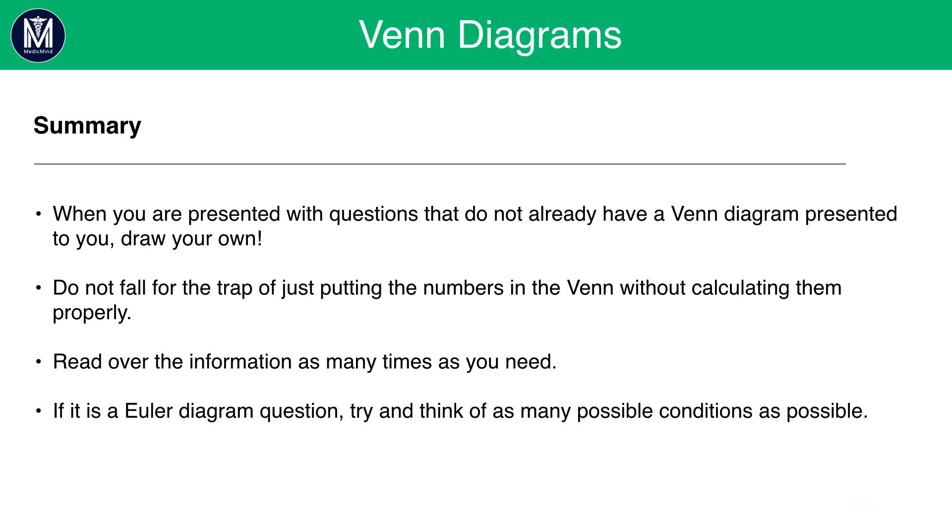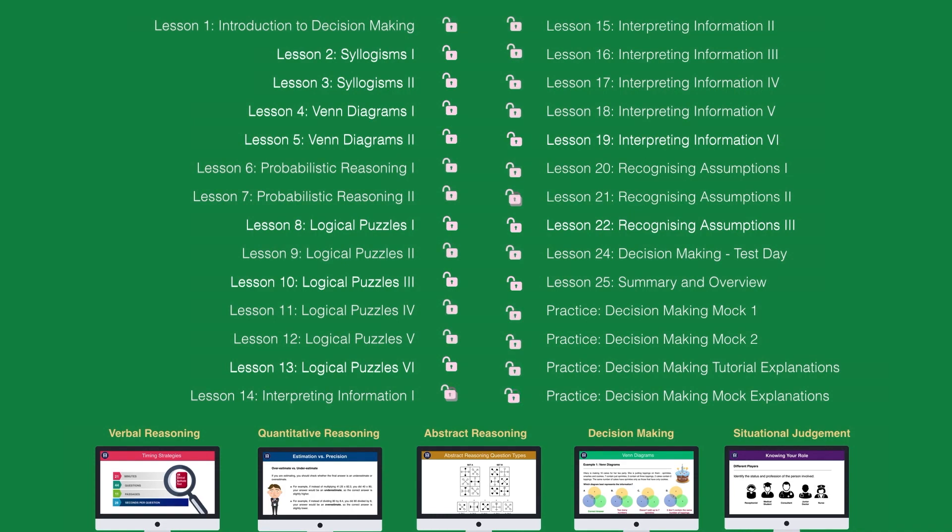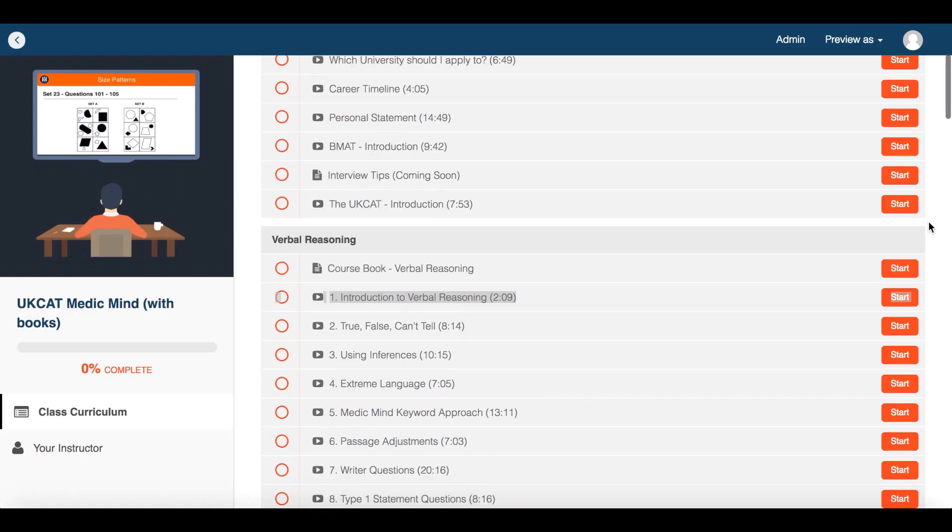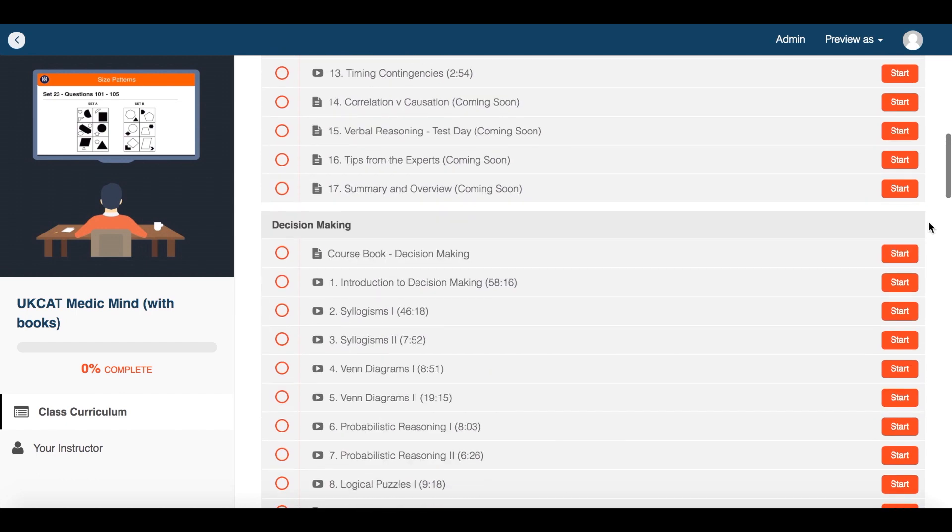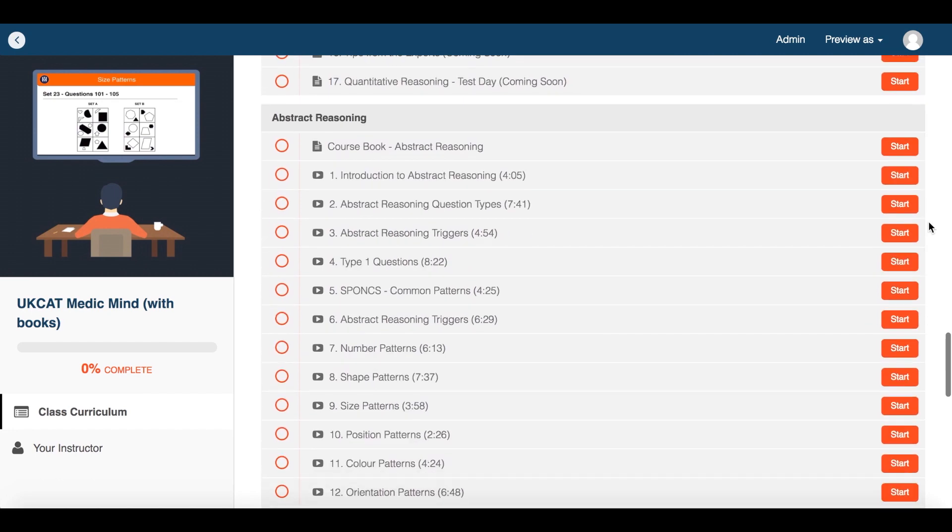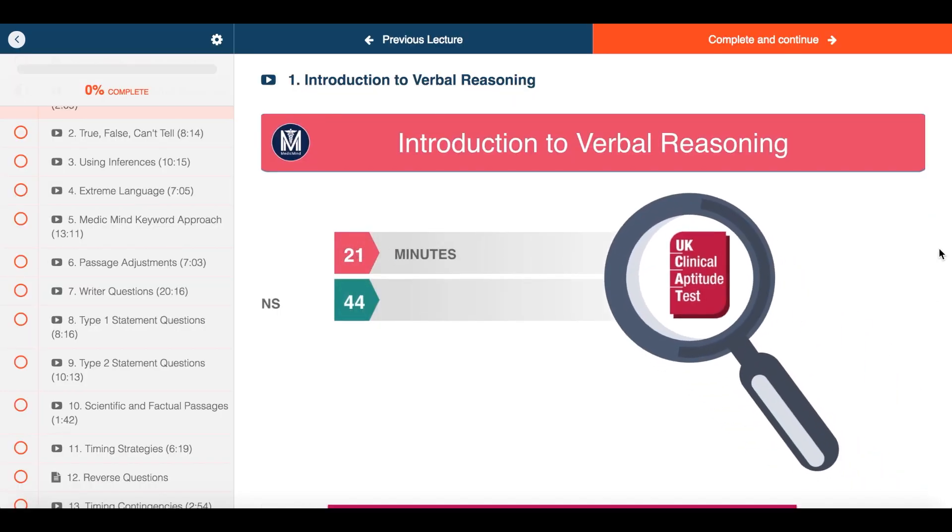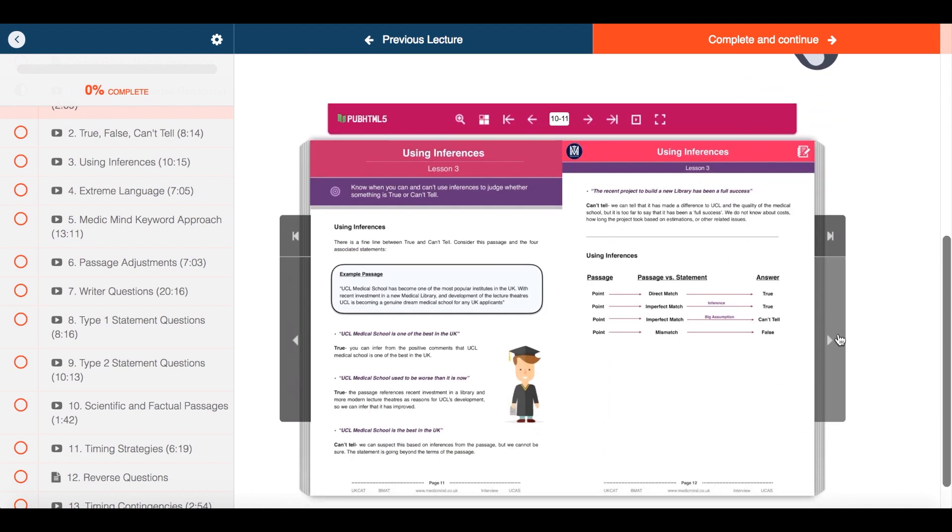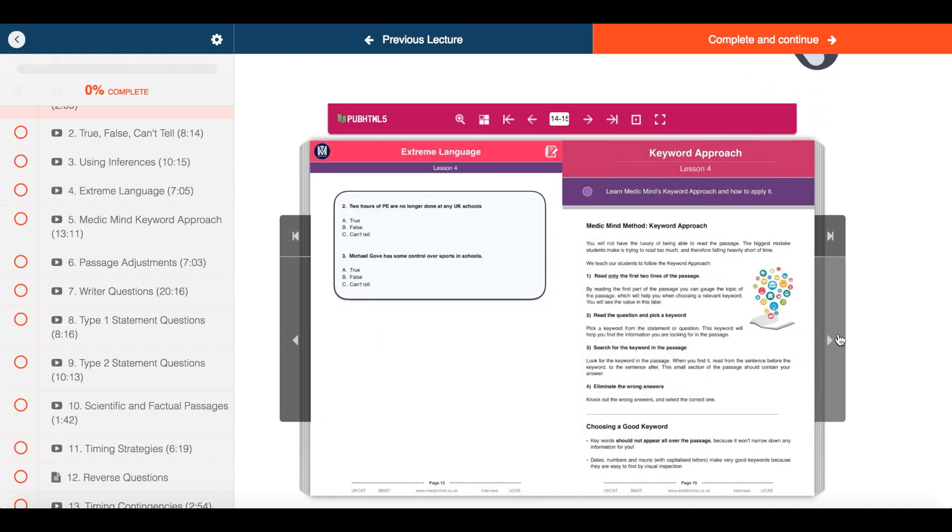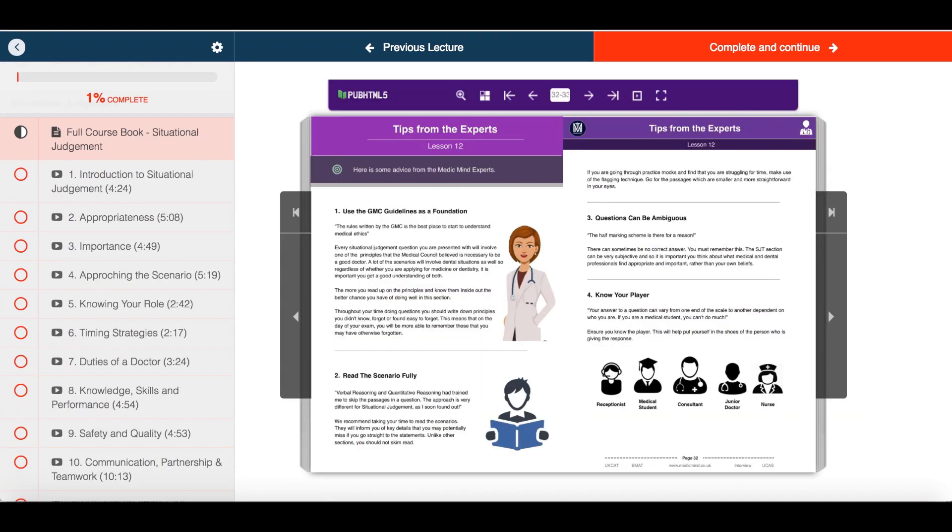And that concludes our session on Venn diagrams. Thank you for watching this free Medic Mind tutorial. For £30, you can unlock all 150 tutorials in our online course. The course covers four full days of UKCAT teaching, as well as a course to help you with your personal statement and interview. You're free to ask as many questions as you'd like to our teachers. And with each tutorial, you can read along using our five UKCAT eBooks, covering 500 pages of theory and questions to guide you every step of the way.